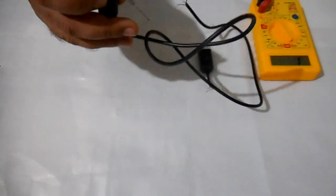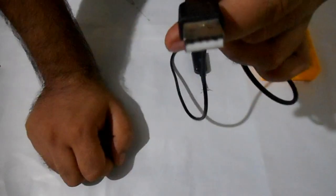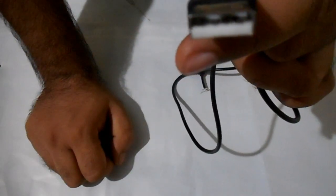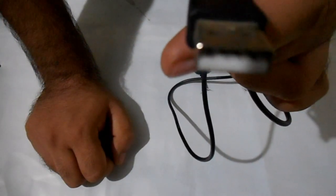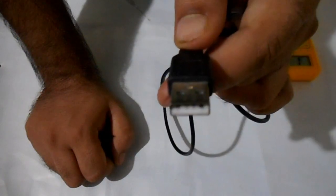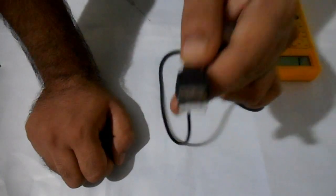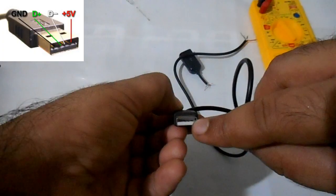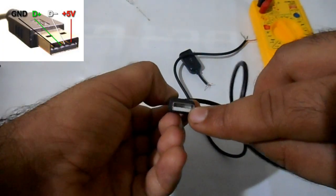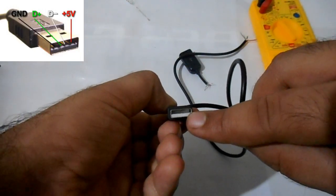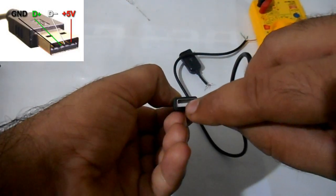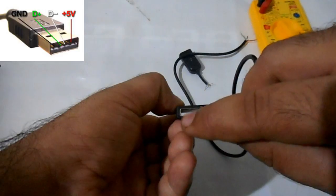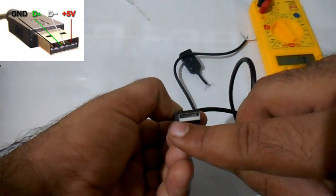If you look inside the USB, you will see there are four contacts. There are four contacts for four wires. First from the right is plus five volt DC. Middle two are data and on the left it's ground.